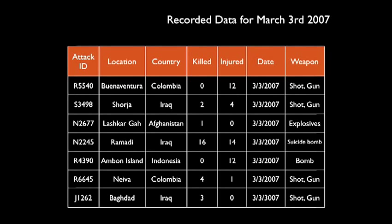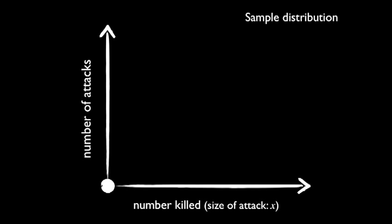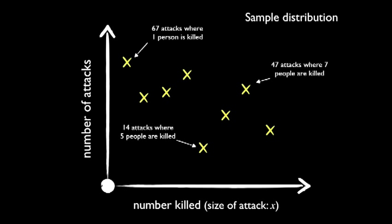Once we had this, we could start doing some cool stuff. What if we were to look at the distribution of the sizes of attacks? What would that tell us? On the horizontal axis, you've got the number of people killed in an attack, or the size of the attack. On the vertical axis, you've got the number of attacks. If we plot data for a sample, you'll see some sort of random distribution — perhaps 67 attacks where one person was killed, or 47 attacks where seven people were killed.